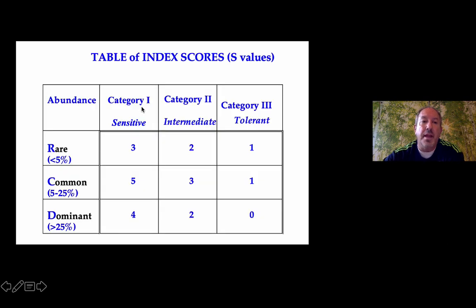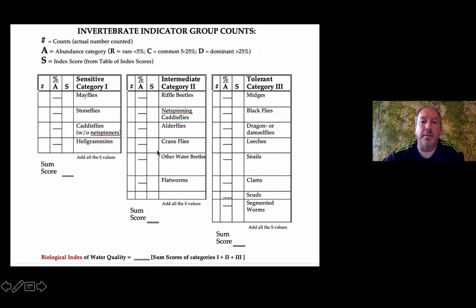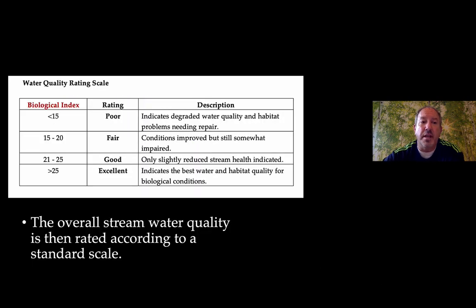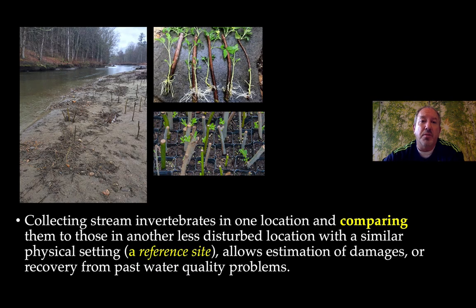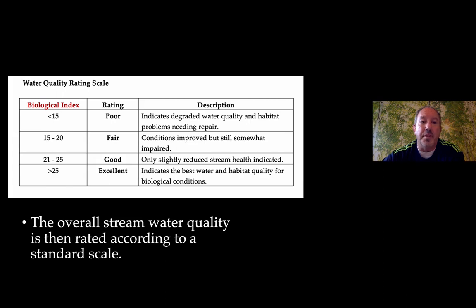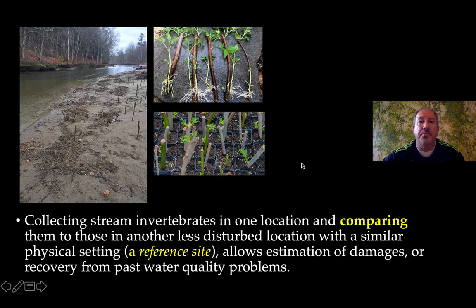You take those S values and add them up in what's known as a sum score. Then you add all three sum scores together, and that's referred to as the biological index, which determines water quality. If the number is high, the river is considered excellent — indicating the best water and healthy habitat. If the river scores poor or fair, decisions need to be made. You might compare one site next to a farm versus a pristine reference site with no agriculture, in order to compare water quality.